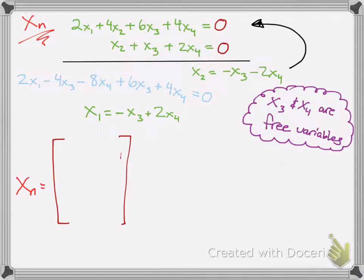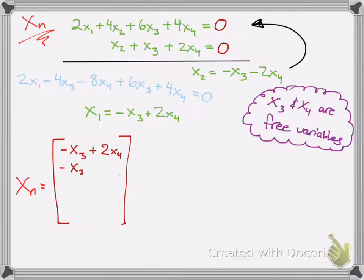x3 and x4 are free variables. Let's see the template we're going to create, similar to what we did for our special solutions. x1 is negative x3 plus 2x4, and x2 is negative x3 minus 2x4. Our free variables are just listed there since they can be any arbitrary number. In order to find a special solution for each free column space, we set each free variable equal to 1 and the other free variables equal to 0.